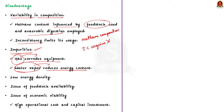The third issue is low energy density — biogas has low energy density compared to conventional fossil fuels. Lastly, there is an issue of economic viability. Although biogas has large environmental benefits, its economic viability is a major concern due to high capital investment and high operational costs.